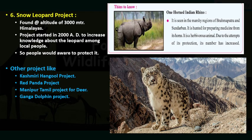The next project is the Snow Leopard Project. The snow leopard is mostly found at an altitude of 3,000 meters, mostly in the Himalayas. This project started in 2018 to increase knowledge about the leopard among local people. Unlike other projects, this snow leopard project aims to spread awareness about the animal to local communities.